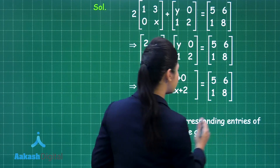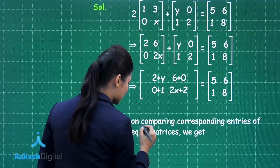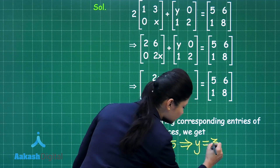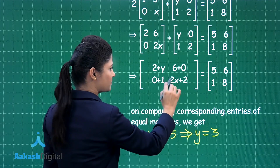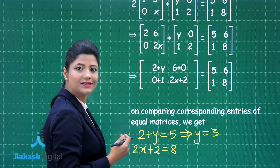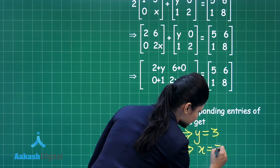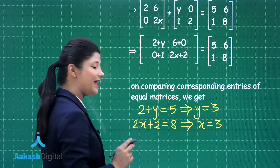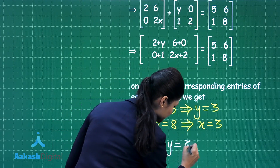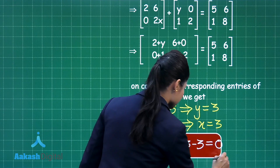On comparing the corresponding entries of these two equal matrices: 2 + y corresponds to 5, giving y = 3. Comparing 2x + 2 to the corresponding element 8 gives 2x + 2 = 8, so 2x = 6, which means x = 3. Since we need to find x − y, x − y = 3 − 3 = 0. So the required answer for this question is x − y = 0.